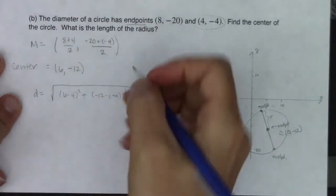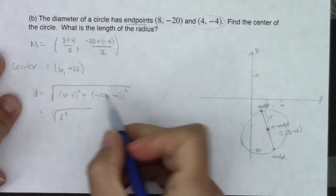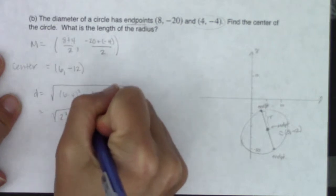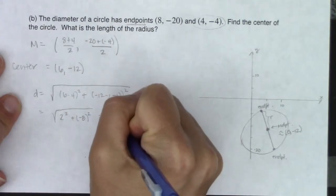The distance formula says, take the difference in your x coordinates. So let's go 6 minus 4 and square that. And then take the difference in your y coordinates. So negative 12 minus negative 4 and square that.